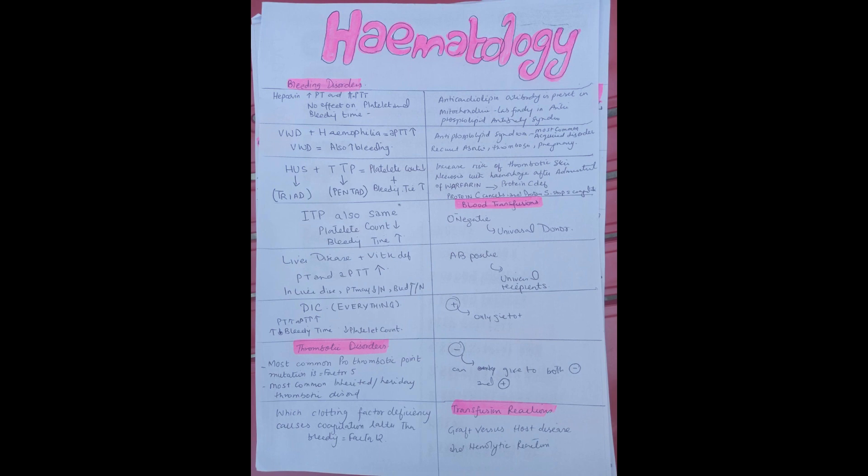Now let's talk about blood transfusion. You must know a few important points about blood transfusion because MCQs are related to these. You must know that O negative is the universal donor and AB positive is the universal recipient. All positives can give blood only to positives, whereas negative blood group people can give blood to both negative and positive.